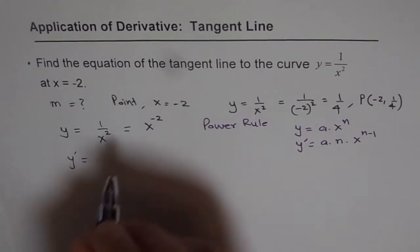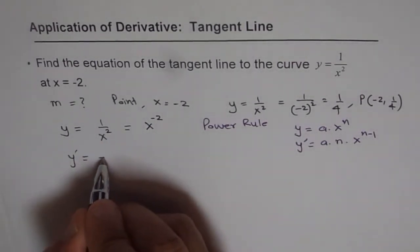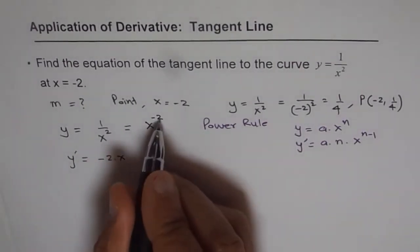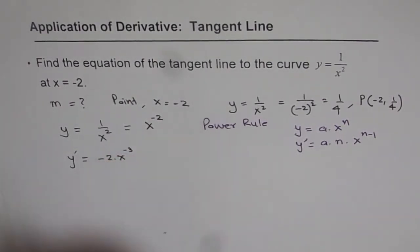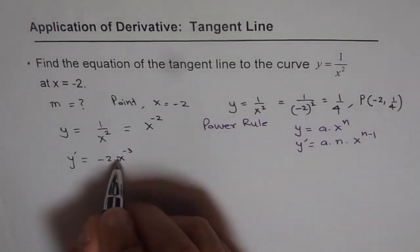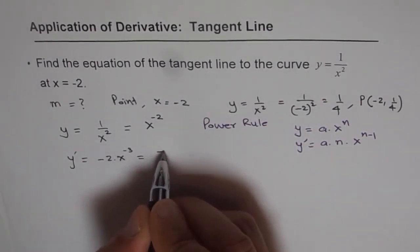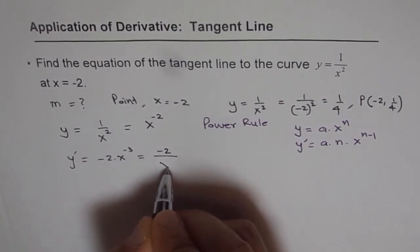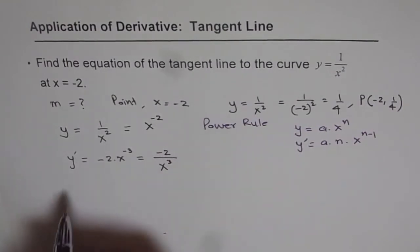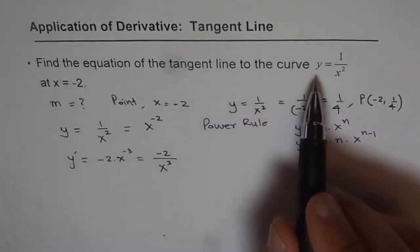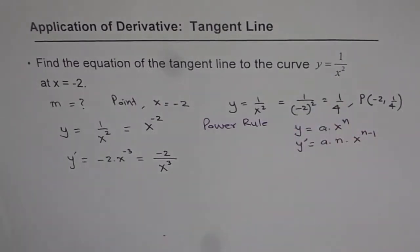So y-dash equals minus 2 times x to the power of minus 2 minus 1, which is minus 3. We can revert back to standard notation: minus 2 over x cubed. That is the derivative of our function y equals 1 over x squared at any point.